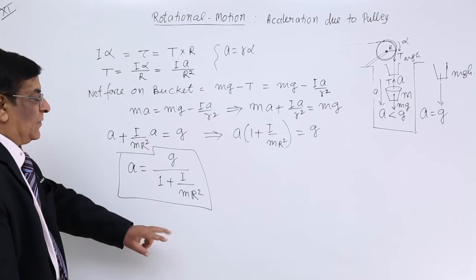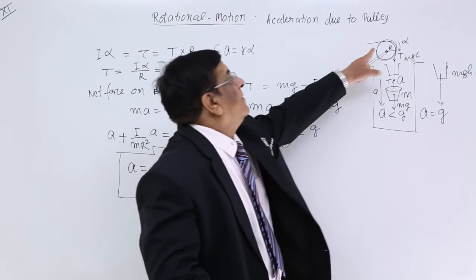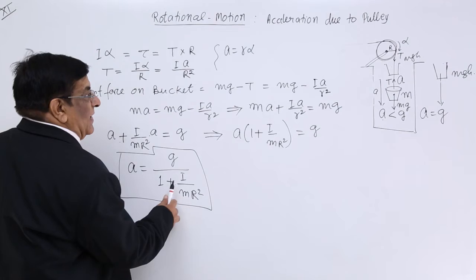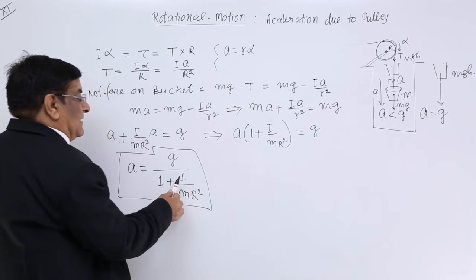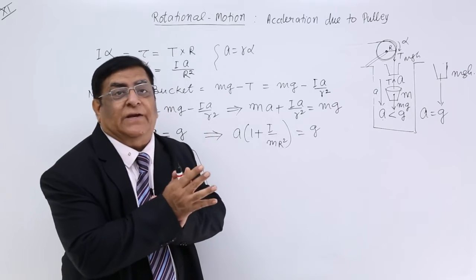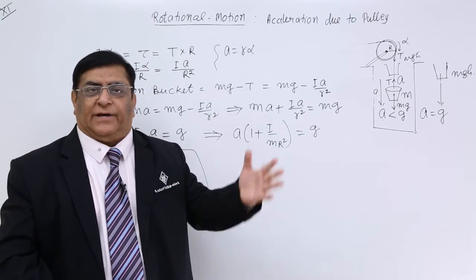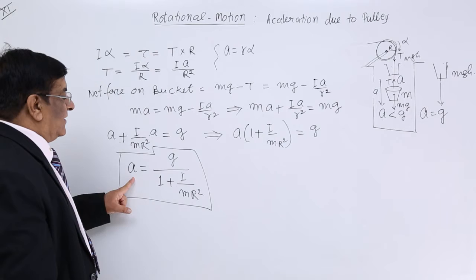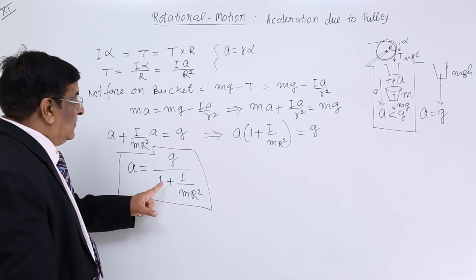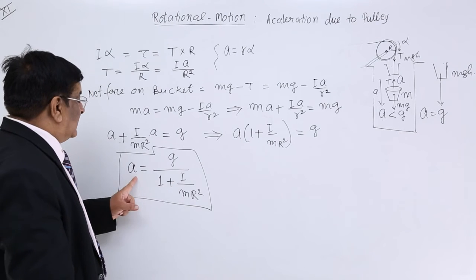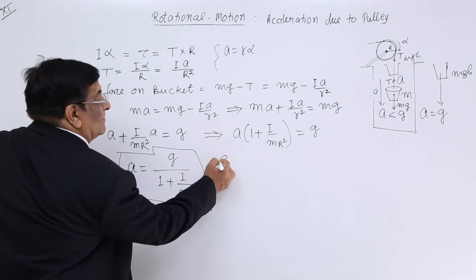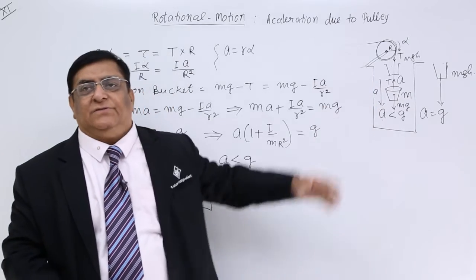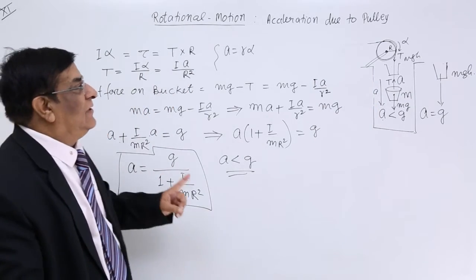Why can this I not be taken as m r square? Because we don't know what it is. If it is a disk, then this has to be written as half m r square. If it is a ring, then we will write it 1 m r square. If it is something in between, then it will be in between, 3 upon 4 or anything. That is why this is the correct formula. Now here you see, this acceleration is g divided by something which is more than 1. Because it is more than 1, this acceleration will be less than g. And this we have already explained with energy equations before.